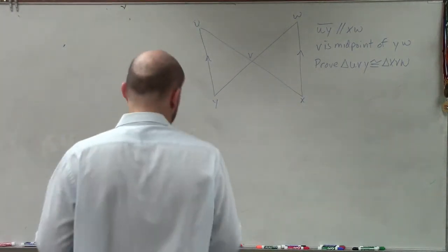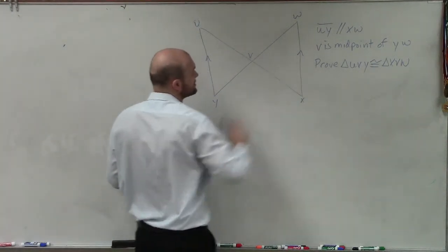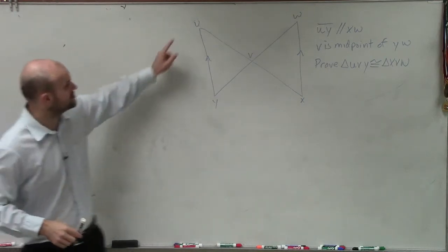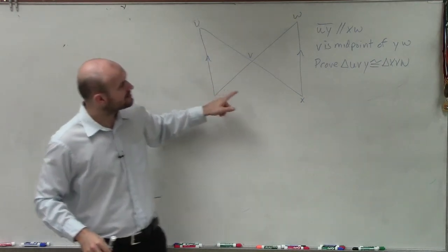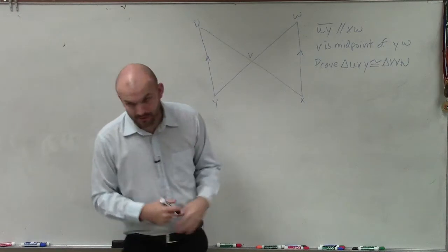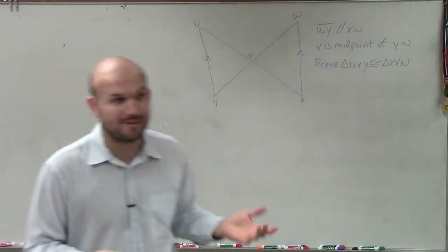All right, so in this example ladies and gentlemen, what they're asking us to do is they're asking us to prove our two triangles UVY is congruent to XVW. And there's a couple of things that they gave us, a couple of pieces of information. They say that two lines are parallel, and they also say that V is the midpoint of the line YW.